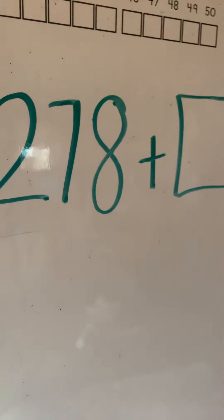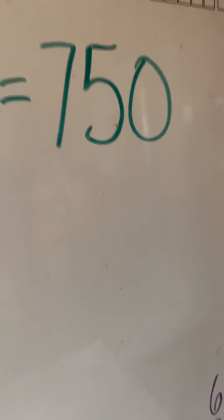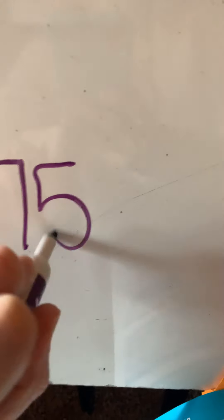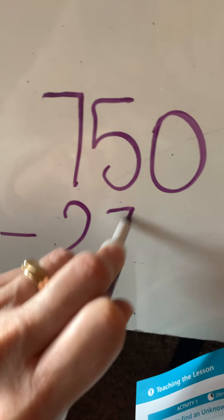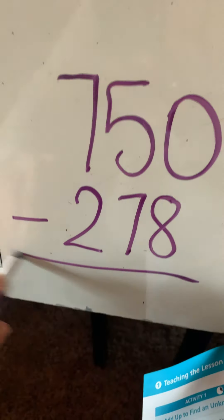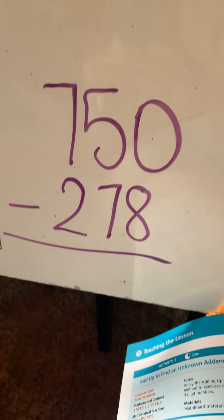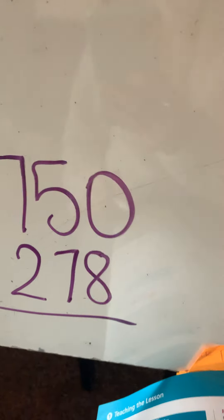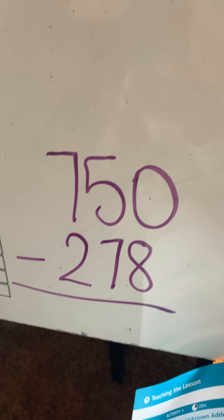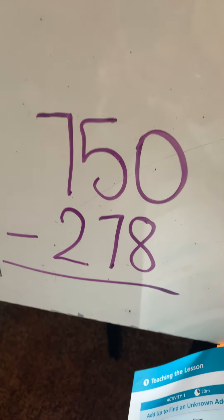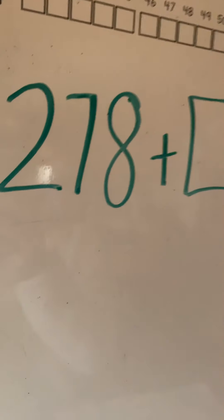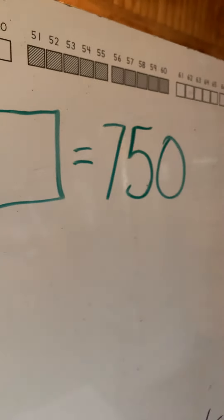Now, I bet some of you are thinking: if he had 750 and he has 278 left, you could subtract — subtract the total minus what he had left — and then you would figure out how many he sold. You could do it that way. We haven't really gone into subtracting from hundreds yet, but I'm sure you could figure it out. Anyway, you can do it this way if you're more comfortable, but I'm going to show you that many of you like to add on to get to the total.